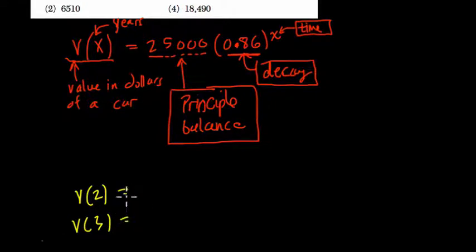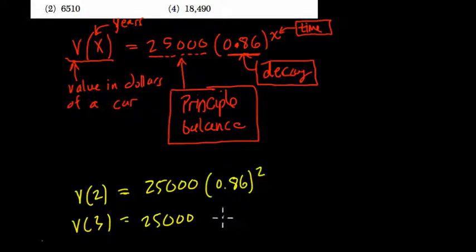In both cases, V of 2 and 3 start with $25,000. I guess that's what the car is worth at the beginning. Right? And then 0.86 to the second power, and 0.86 to the third power. What do these equal? Let's compare them.